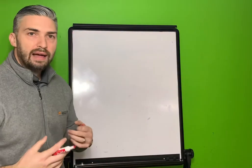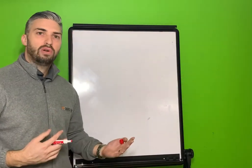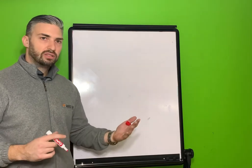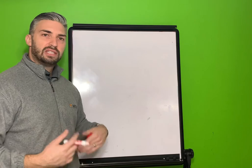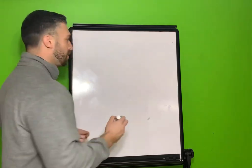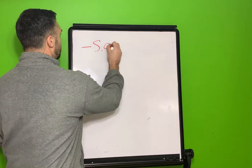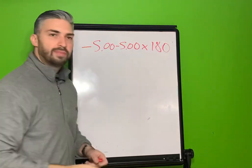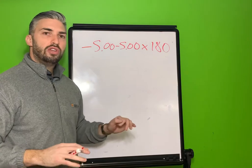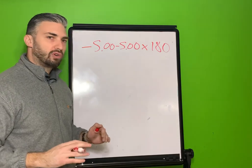You will have some prescriptions that have an astigmatism component, so they're sphero-cylindrical, and you'll have to calculate the vertex distance for them to see what they'd be in contact lens power. So an example would be negative 5, negative 5, axis 180.